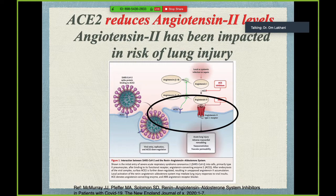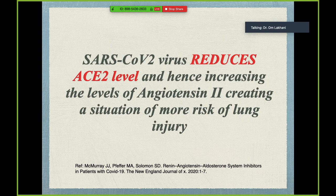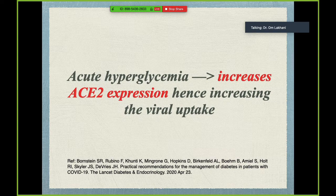One very important physiological role of ACE2 is that it reduces angiotensin 2 levels in the body. Angiotensin 2 is bad for the lungs, kidneys, and vasculature — it causes acute lung injury and adverse myocardial remodeling. ACE2 is actually protective. When SARS-CoV-2 binds with ACE2, it reduces ACE2 levels and hence increases angiotensin 2, creating more lung injury — one of the key pathophysiological mechanisms of this virus.